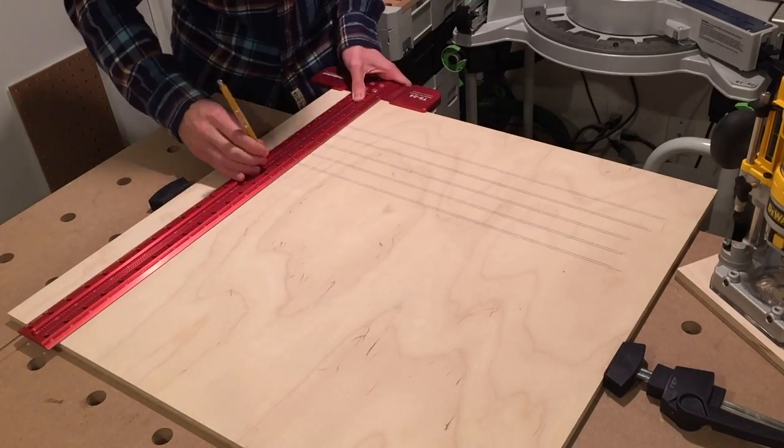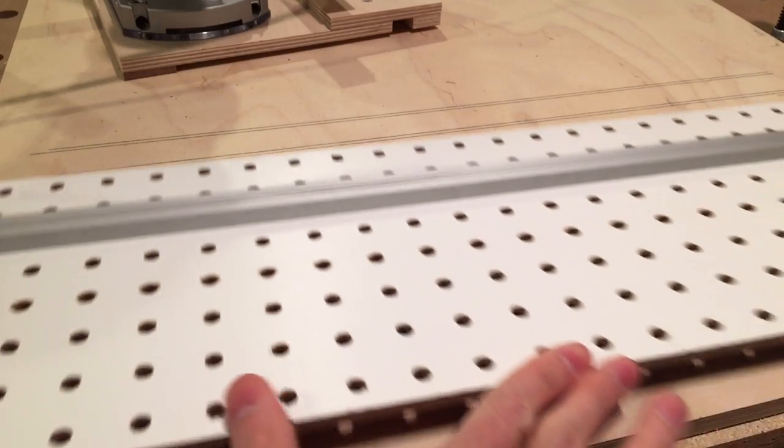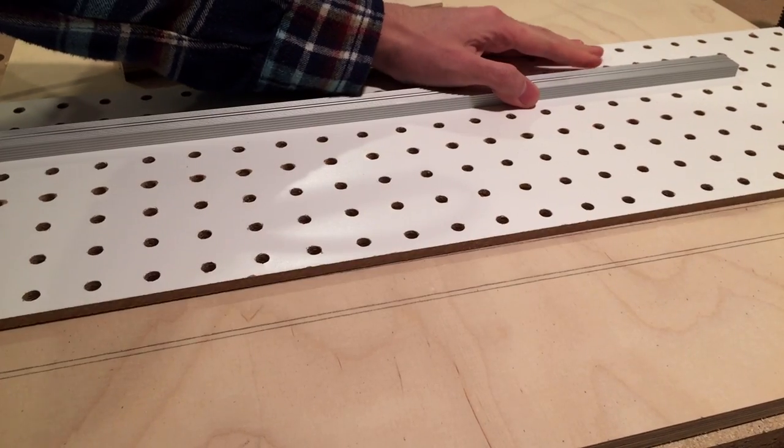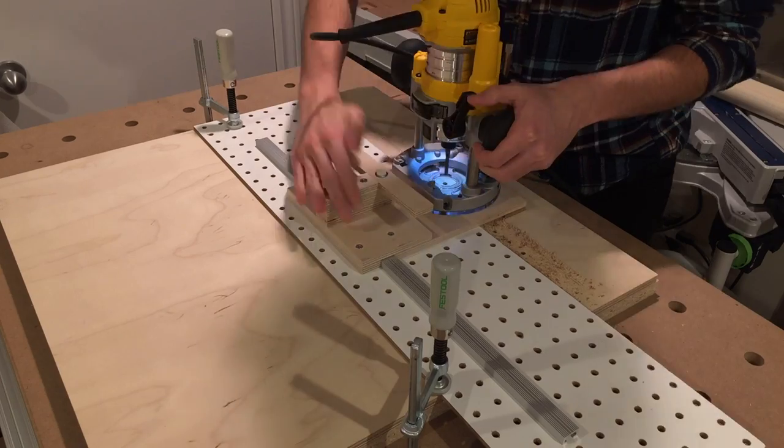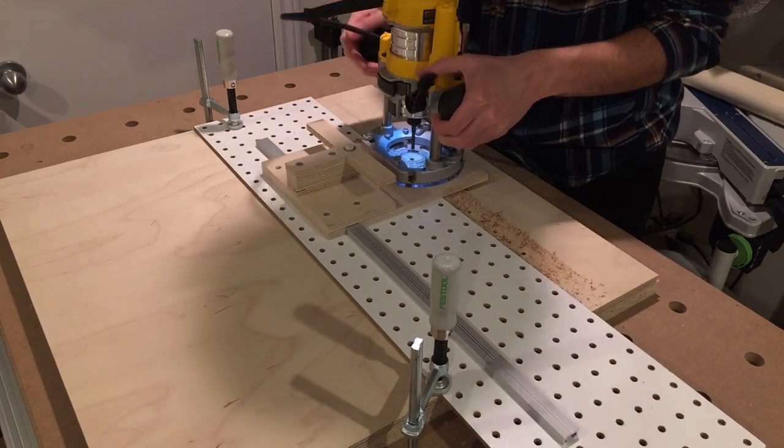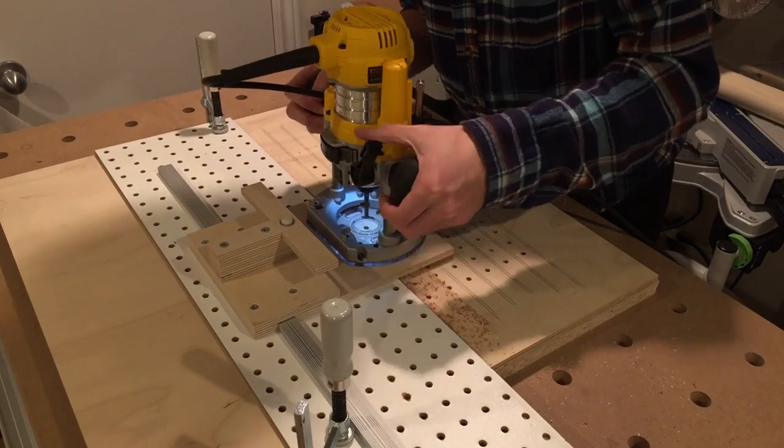The segments that form the pantograph are made of half-inch plywood. Each has 13 one-quarter inch diameter holes spaced one inch apart. This is a perfect opportunity to use my shelf pin hole drilling jig.